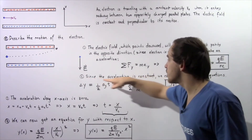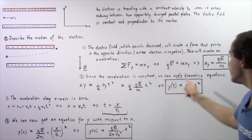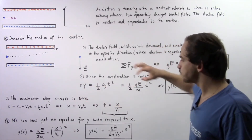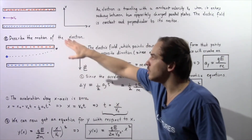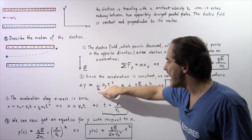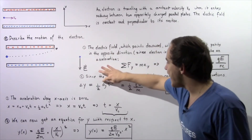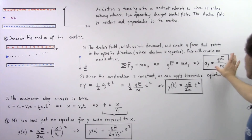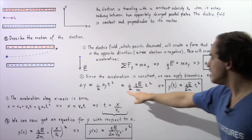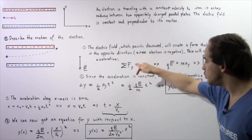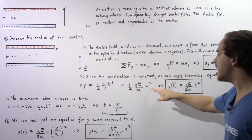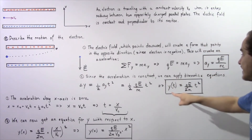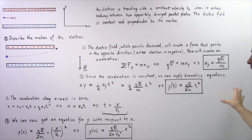Because we're dealing with a constant acceleration, we can apply the kinematics equations. The change in position along our y-axis is equal to one-half multiplied by AY multiplied by T squared. Replacing AY with our expression, we get y equals one-half multiplied by QE divided by M, multiplied by T squared. So y with respect to T is given by this equation.